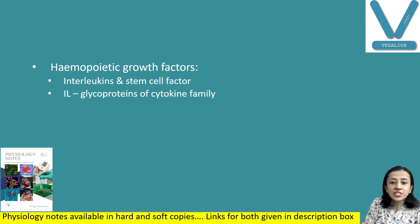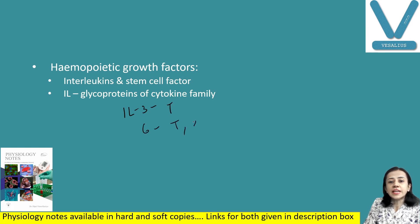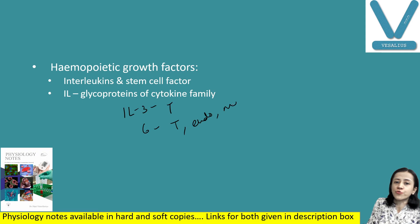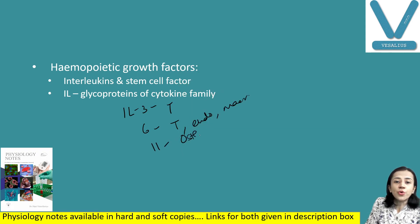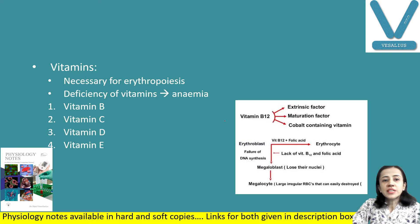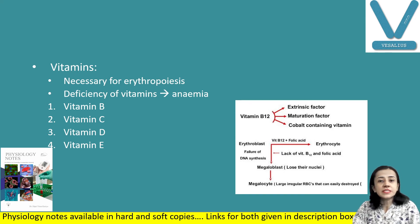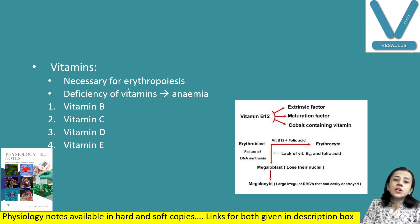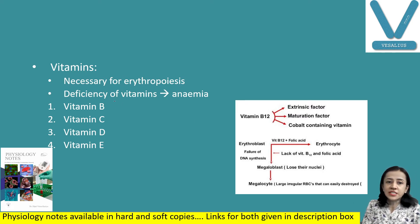Certain vitamins are also necessary for erythropoiesis, and their deficiency results in anemia. General vitamins include vitamins B, C, D, and E. Maturation factors — which are special maturation vitamins — are vitamin B12 and folic acid.